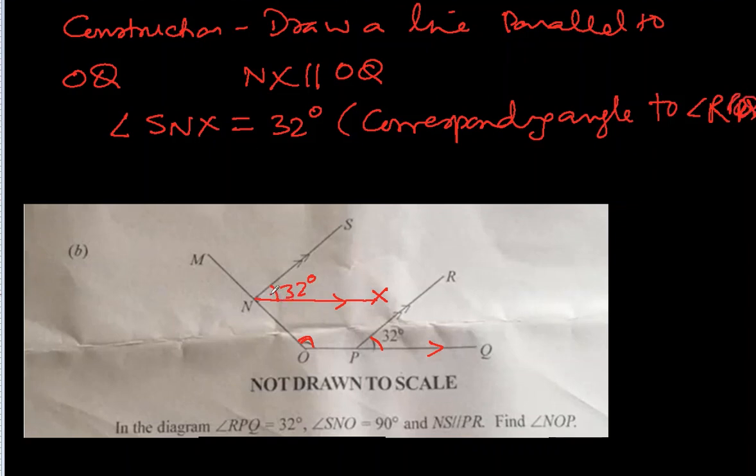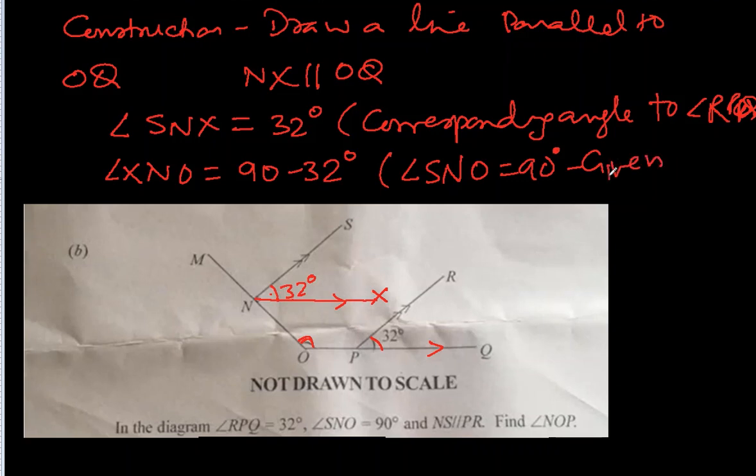Okay. Now, since this is 32 and total is 90, so angle XNO will be 90 minus 32 degrees. Yeah. Because angle SNO is equal to 90 degrees given. All right. So 90 minus 32, that will be 58 degrees. So this angle is 58 degrees.